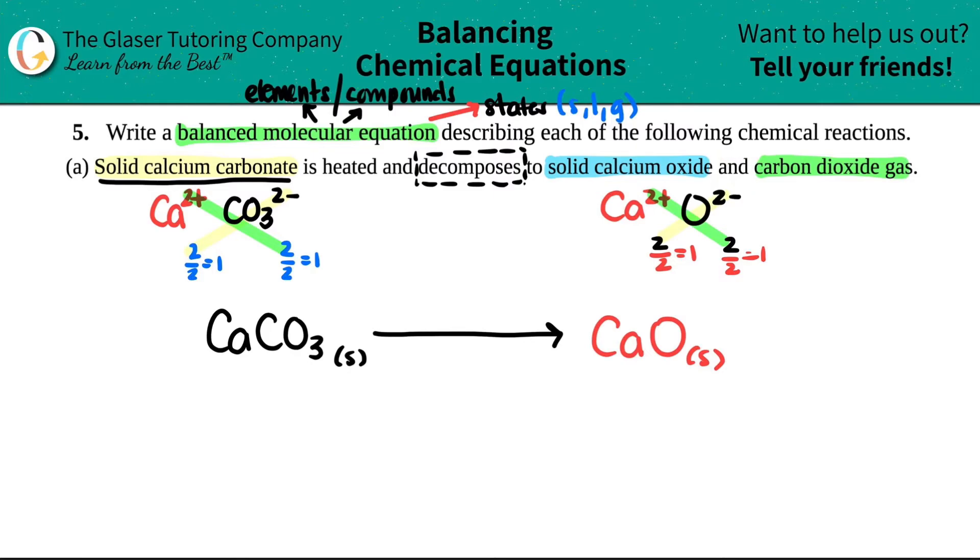And it decomposed into solid calcium oxide and carbon dioxide gas. So literally and is plus, plus carbon dioxide gas. Carbon dioxide, you guys should know is CO2. But this is your covalent compounds where you just call it as you see it.